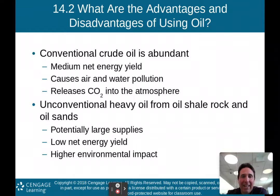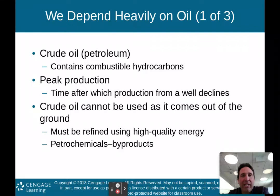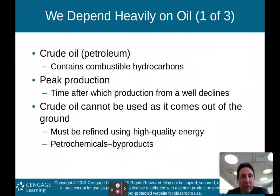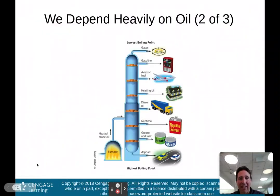There may be a lot of this heavy oil available, but the energy yield is low and the environmental impacts are high — so conventional crude oil may be the better option by comparison. Crude oil is known as petroleum and contains combustible hydrocarbons. Peak production is the time after which production from a well begins to decline. Crude oil cannot be used as it comes out of the ground — it must be refined using high-quality energy into petrochemicals, producing byproducts in the process.